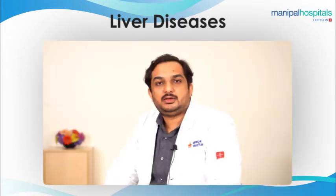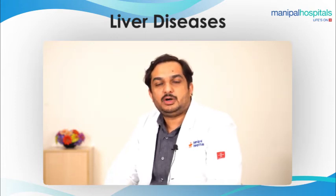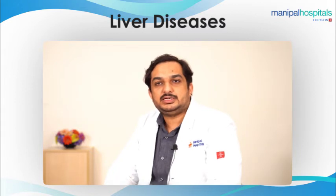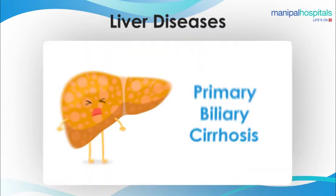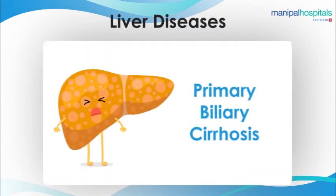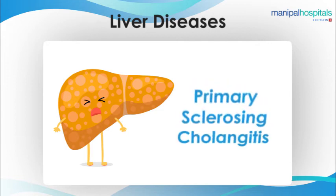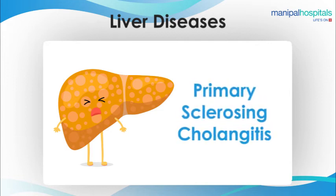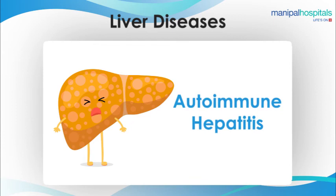The other category of liver diseases are autoimmune, where the body's immune cells affect the liver. Such conditions include primary biliary cholangiitis, primary sclerosing cholangiitis, and autoimmune hepatitis.